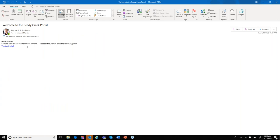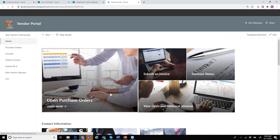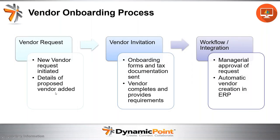By clicking on that link, the vendor is now driven to the portal where they can look at their orders, submit invoices, and do things like that. So, basically, we took the vendor request initiated from within the organization, sent that invitation to the vendor, they completed all necessary documentation including the W-9, we kicked off a managerial approval, and automatically created that vendor in our ERP — such that now I can create POs and do other things with that vendor.